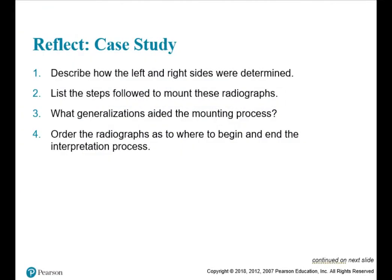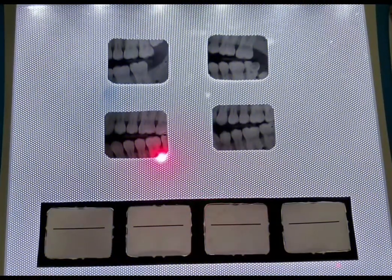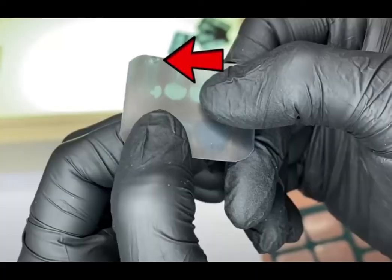So the first question in our case study described how the left and right sides were determined. The first step in determining the correct sequence is we ensure that the dots on the film are all positioned convex which means pimple not dimple. This helps us indicate the left and right sides of each film.